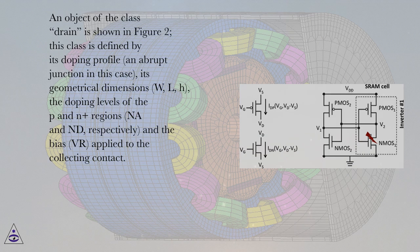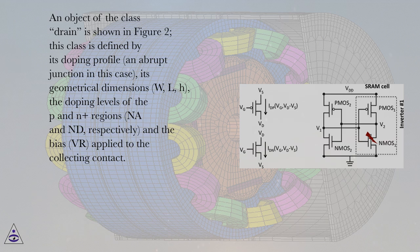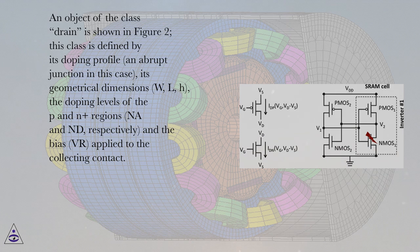An object of the class drain is shown in figure 2. This class is defined by its doping profile, an abrupt junction in this case, its geometrical dimensions W, L, H, the doping levels of the P and N plus regions, Na and ND respectively, and the bias VR applied to the collecting contact.